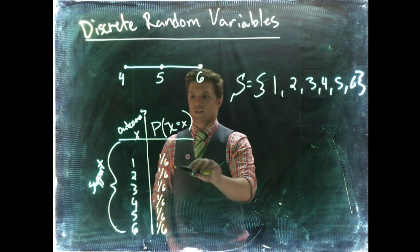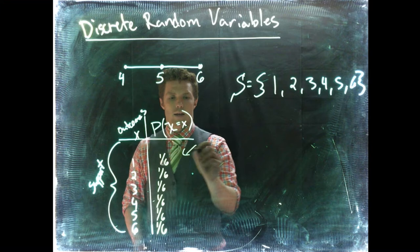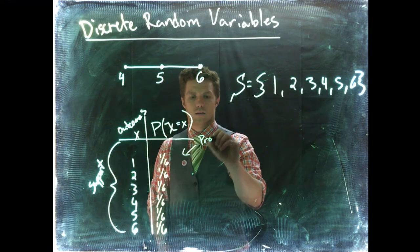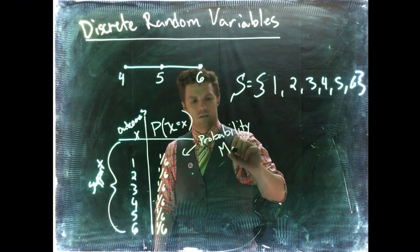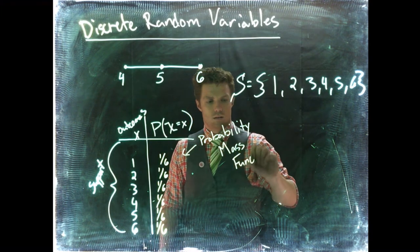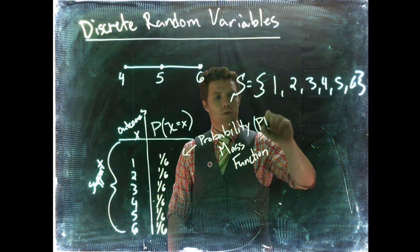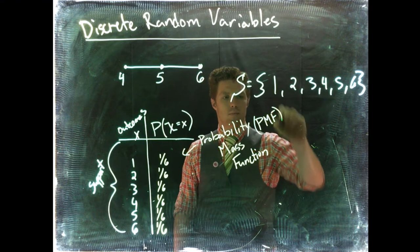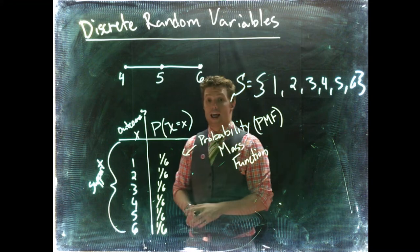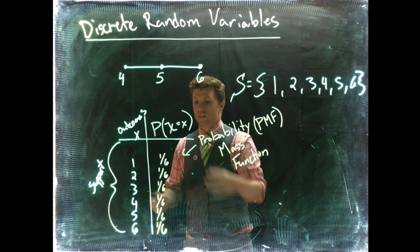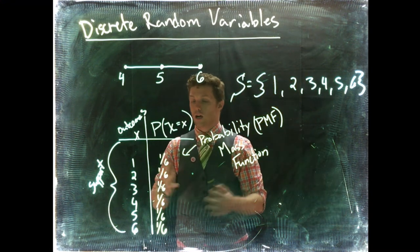So when our probabilities are written like this, directly across from the possible outcomes, this is known as our probability mass function, or it's going to be shorthanded to PMF. Probability mass function. So now we're going to be able to do some interesting things and be able to tweak our probabilities and be able to talk about some different scenarios.